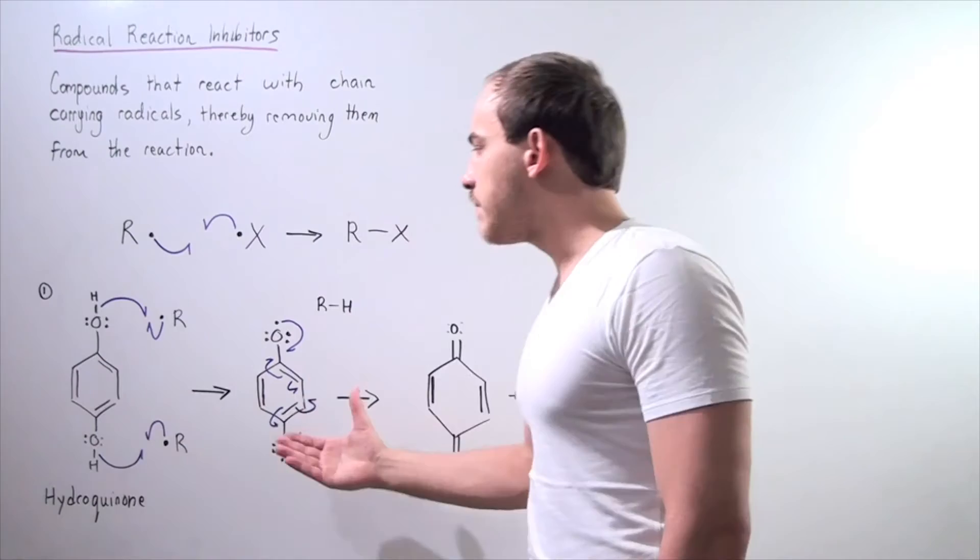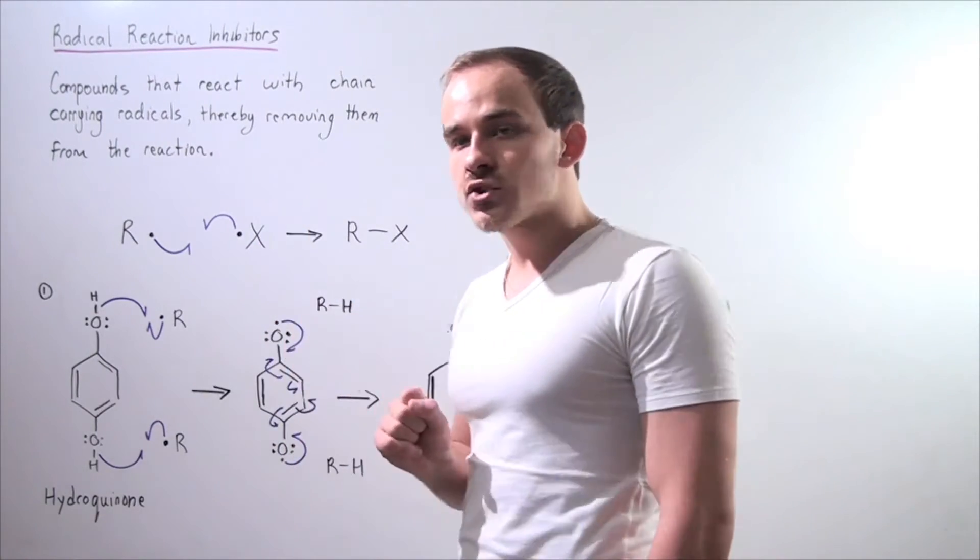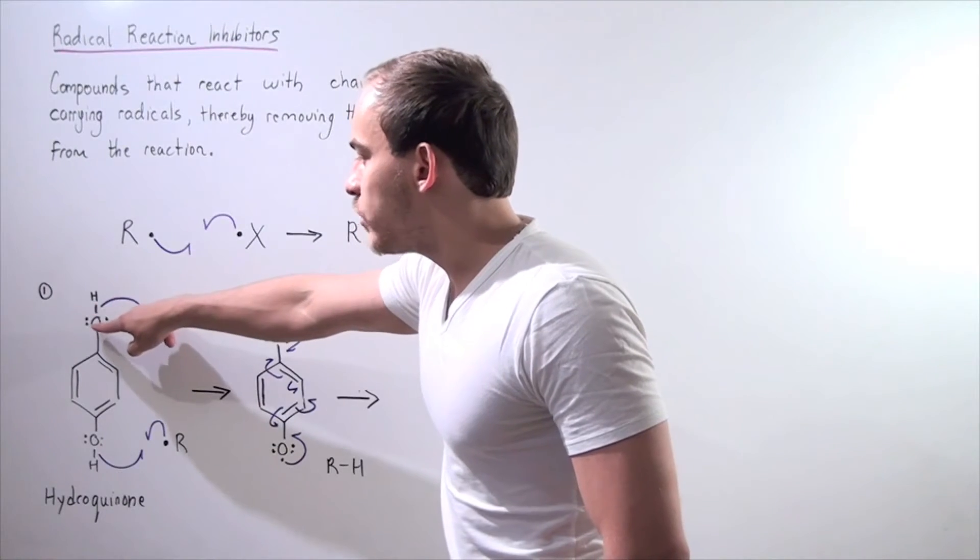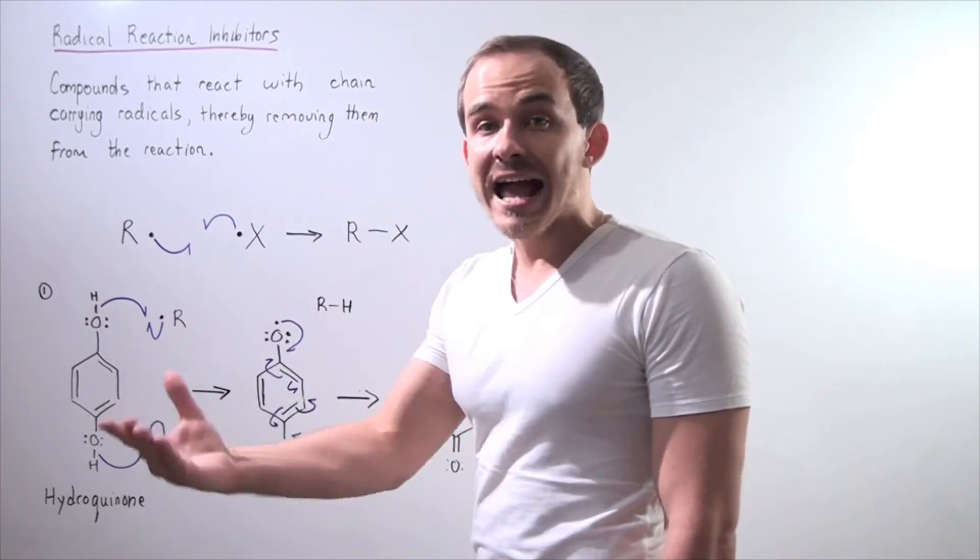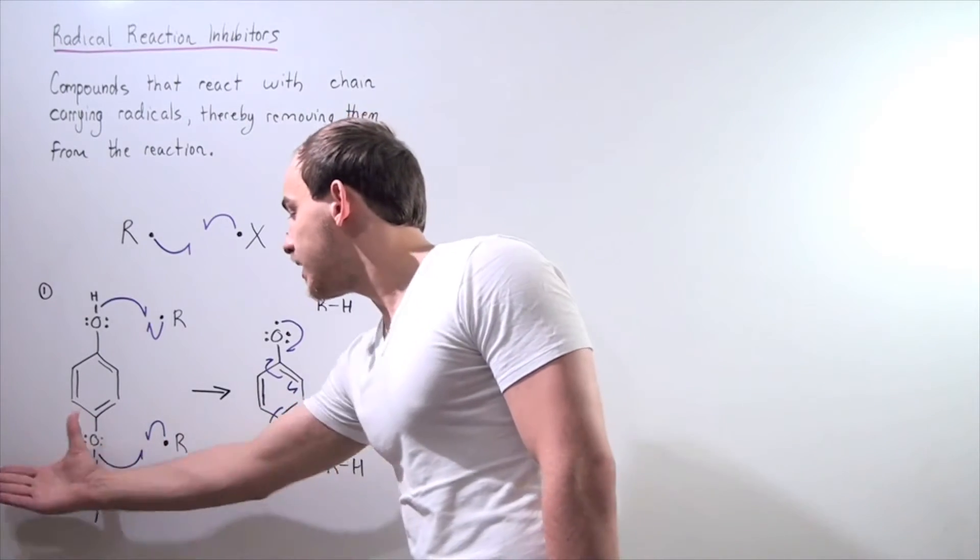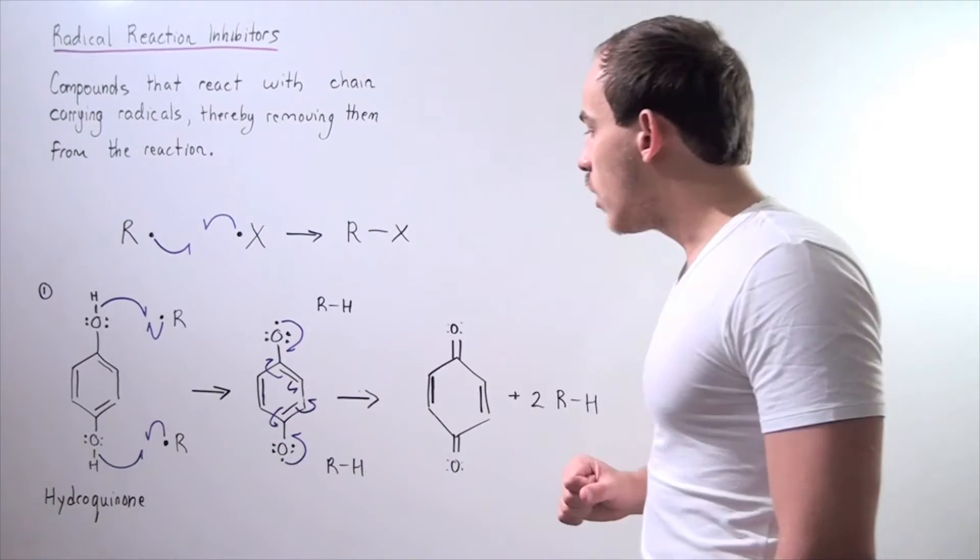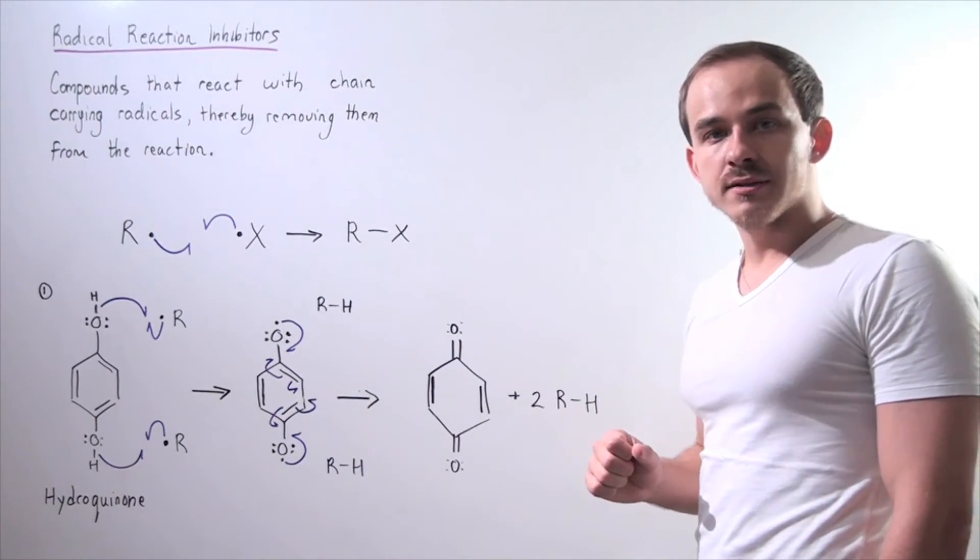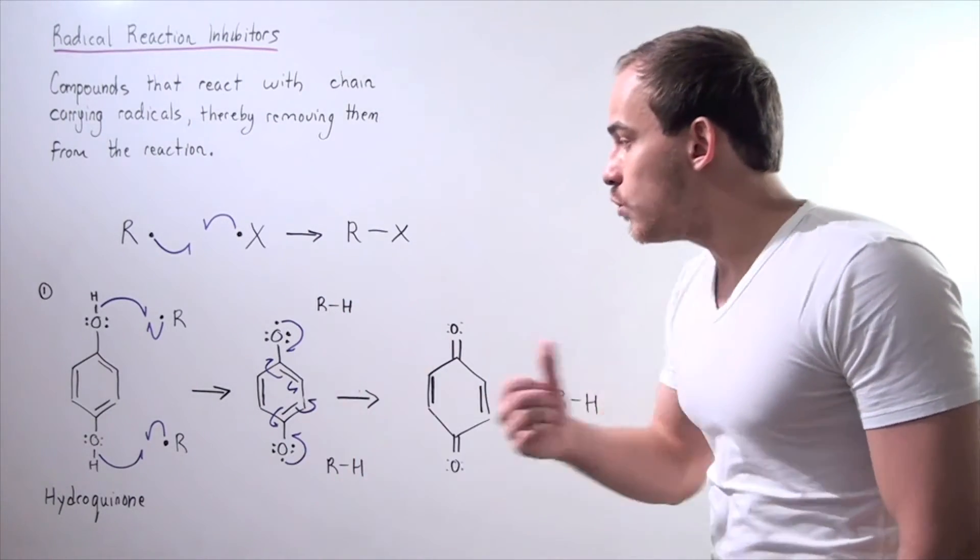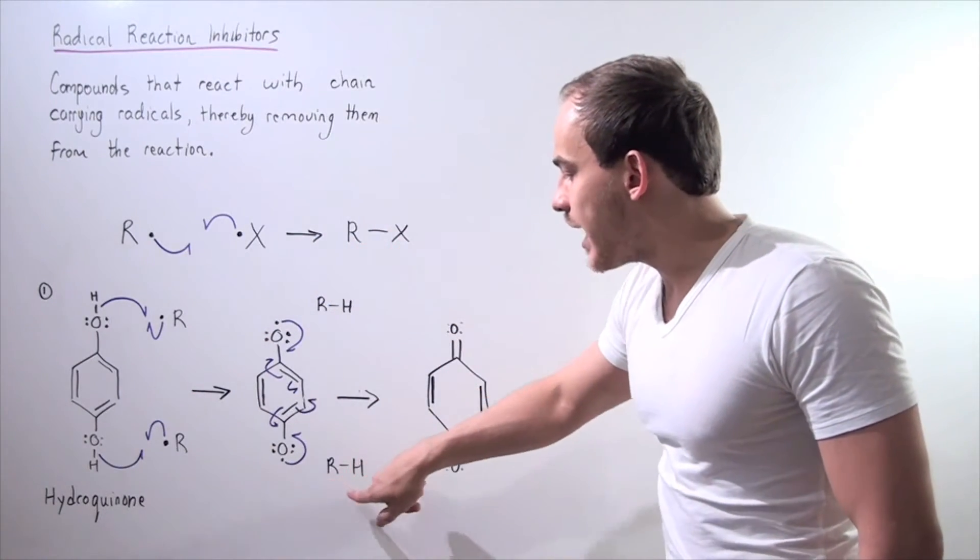So in the first step of this inhibition reaction, we have a single electron in the bond between the O and the H reacts with this electron. And the same exact thing happens on the bottom, with the bottom hydroxy group. And we form the following intermediates. So we have removed our chain-carrying radicals and formed RH and RH.